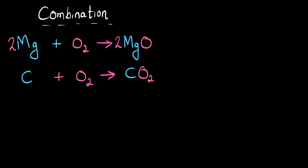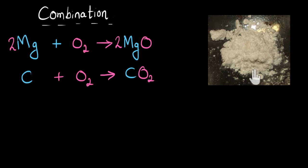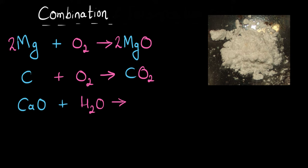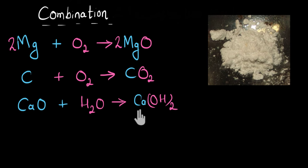Here I have a white powder — calcium oxide. When I pour some water on top of it, the water combines with the calcium oxide and we get a white milky mixture, which is used to whitewash walls. Writing the equation: calcium oxide (CaO) reacts with water (H2O), and they combine to give calcium hydroxide — Ca(OH)2. The equation is balanced: 2 oxygen, 2 hydrogen, 1 calcium on both sides. If you touch the container, you'll feel it getting warmer, so heat energy is given out in this reaction also.